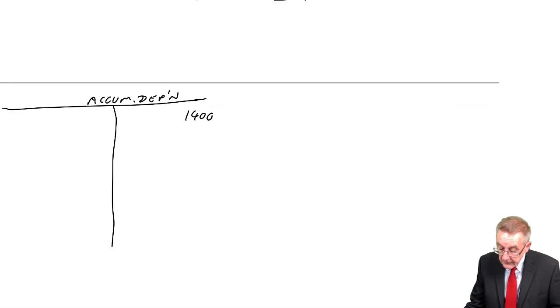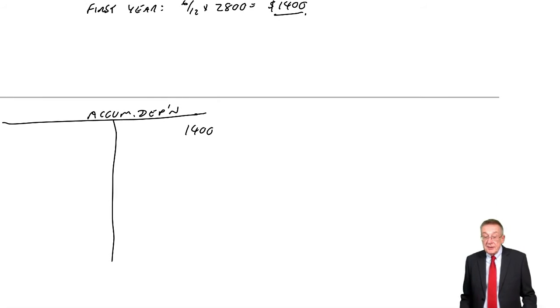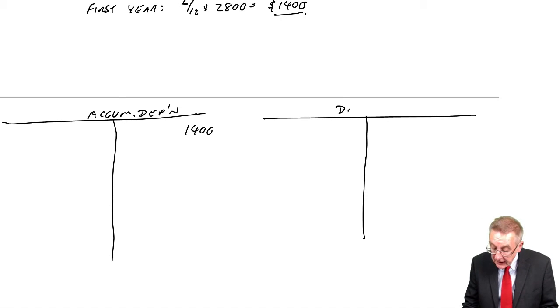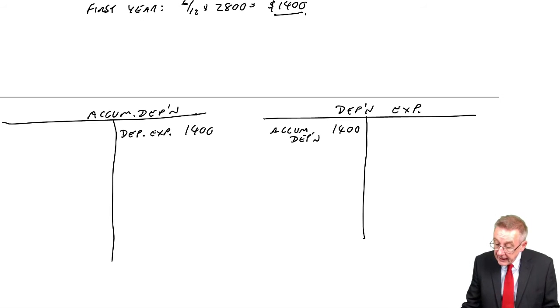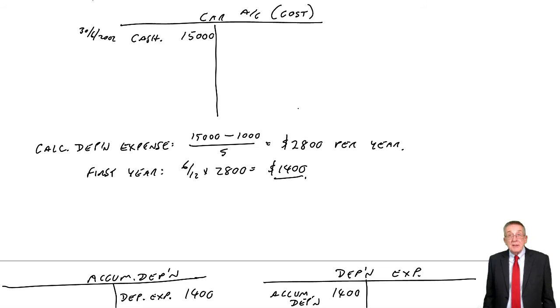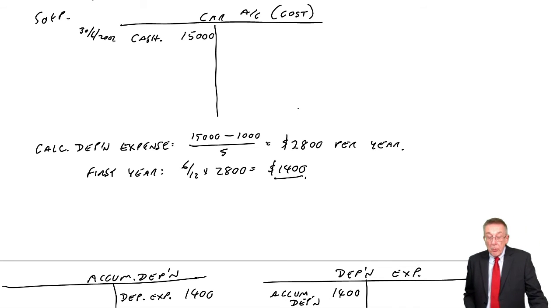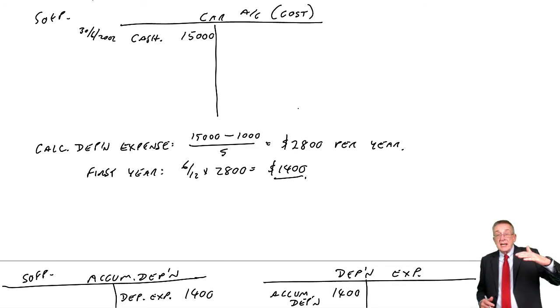So we credit accumulated depreciation, and the double entry, the cost of what we've done, we'll debit the depreciation expense account. It's just that one entry. And having made the entry, now we can close off the accounts. The car, that'll appear on the statement of financial position. We leave the balance there. The accumulated depreciation, that'll appear on the statement of financial position as well. We leave the balance there. And again, on the statement, under non-current assets, you'll show cost less accumulated depreciation. You'd show a net of 13,600.